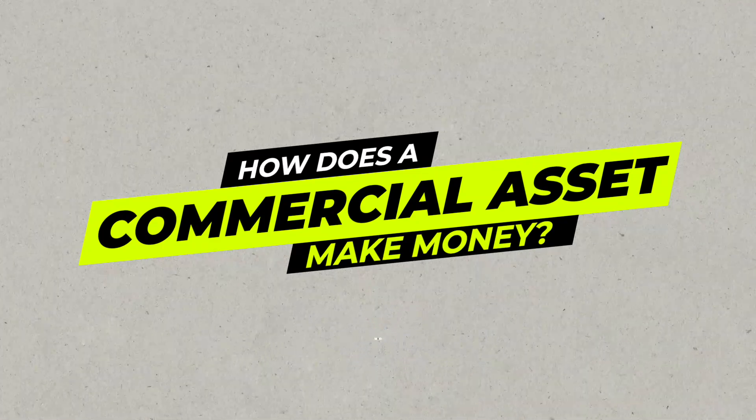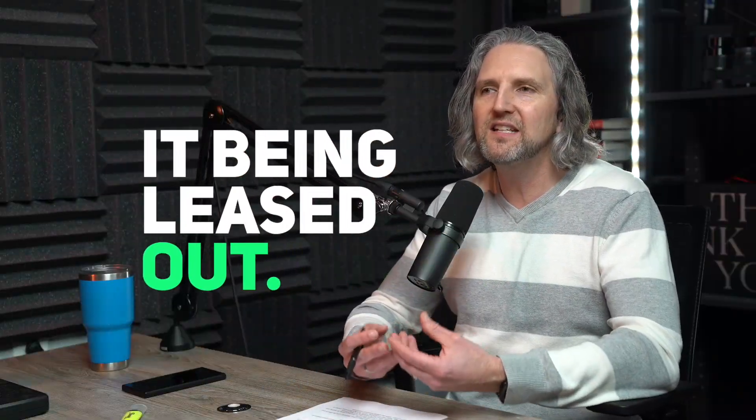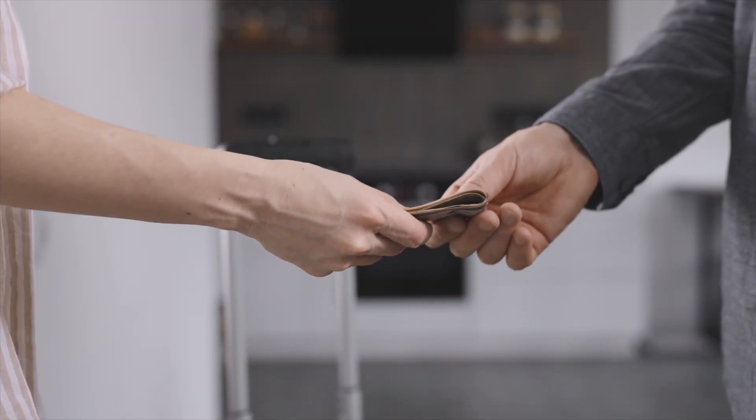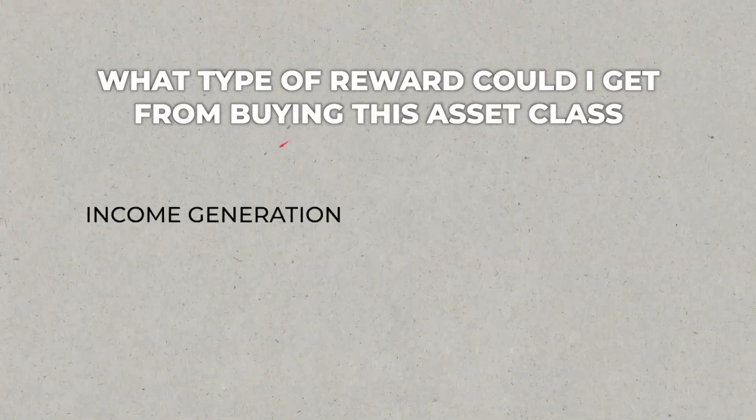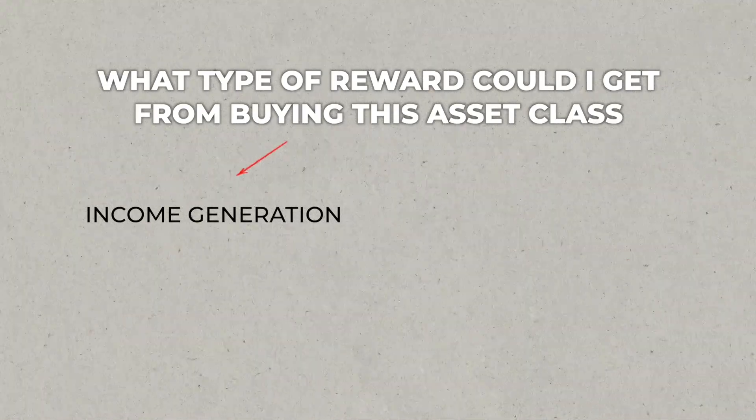How does a commercial asset make money? A commercial asset makes money through being leased or rented. Think of a little strip mall with a teriyaki place, a nail salon, and a mailbox store — all three are rented. They pay rent on a monthly basis for their lease, and that money comes to the landlord. When you purchase a commercial asset, the first reward you're thinking about is income generation — we buy it for cash flow, coming in through rent or leasing of that property.